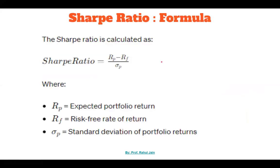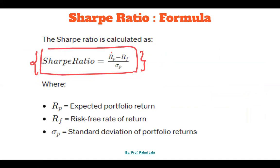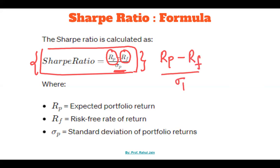We are going to take an example as well, and I will also tell you how we need to calculate it, but first let's discuss the basic part. The formula to calculate the Sharpe Ratio is: expected portfolio return (RP) minus risk-free return (RF), divided by the standard deviation of portfolio return (sigma P).